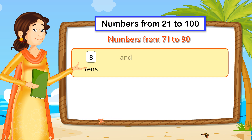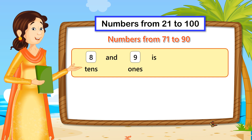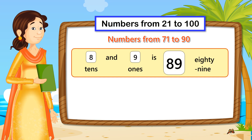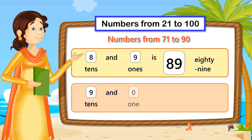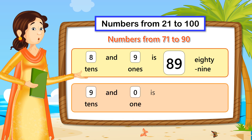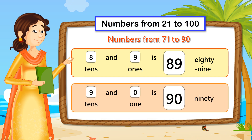8 tenths and 9 ones is 89. 9 tenths and 0 ones is 90.